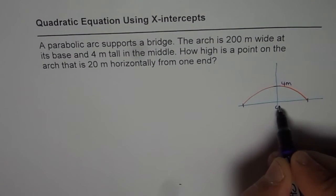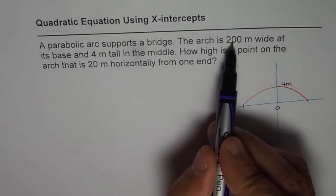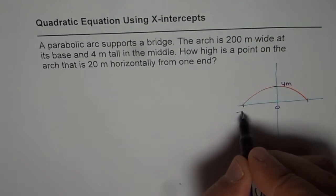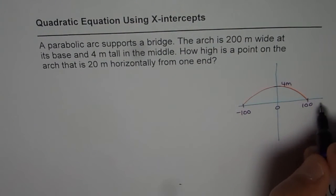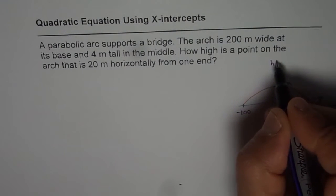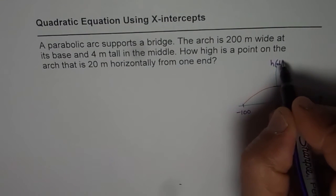And if zero is here, it says the arc is 200 meters wide. So these two points will be minus 100 and plus 100 units away in meters. So this is the distance in meters and that is height with distance.